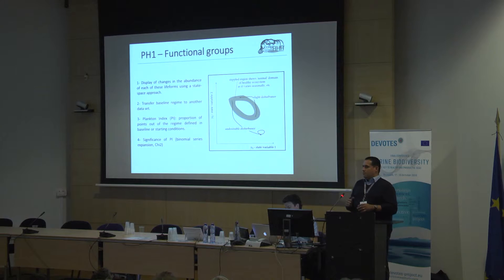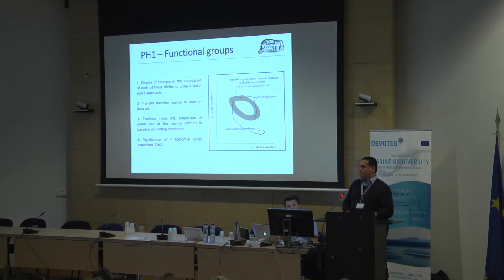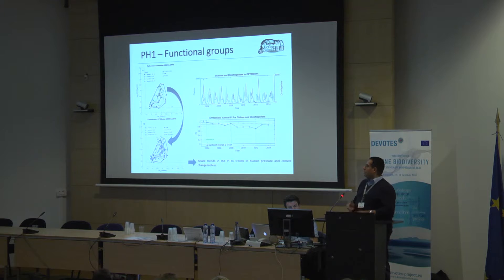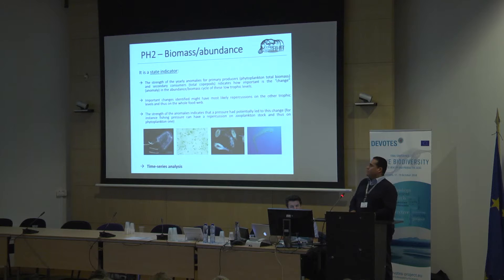The idea is based on the work of Paul Tett et al., using these 'donuts' — one state variable compared to the other — so you can follow the seasonal succession, and then transfer to a baseline regime, a reference period, and calculate the proportion of points out of the regime defined in baseline or starting conditions. You can see in the upper right, diatoms and dinoflagellates as a couple of functional groups, with the internal variability shown and the PI index — the proportion of points out of this regime.